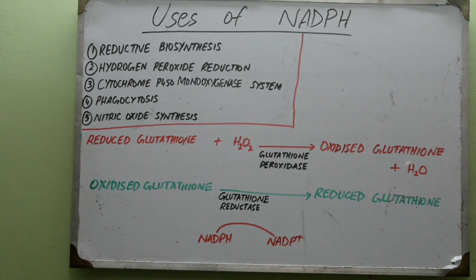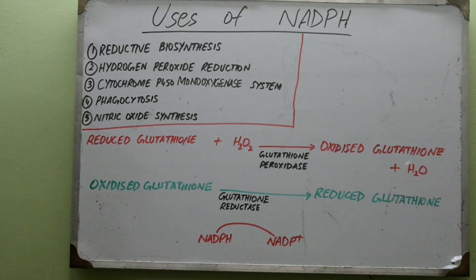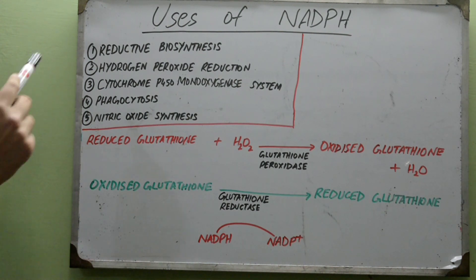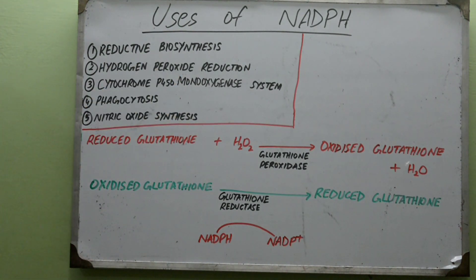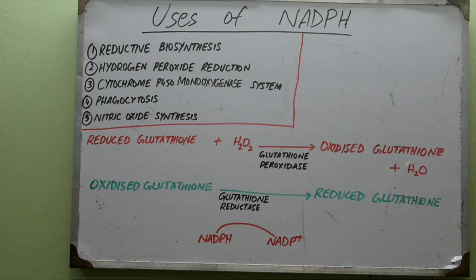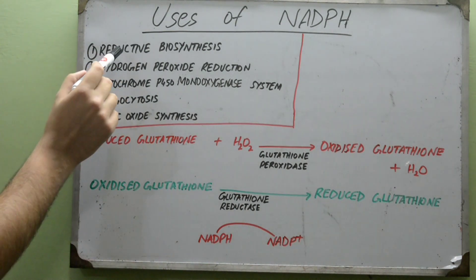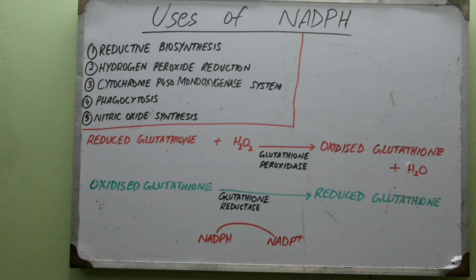NADPH and NAD share differences because NADPH is a much stronger reducing agent as opposed to NADH. So it is used, for example, in the reductive biosynthesis of cholesterol and of steroids. We'll discuss that in more detail under lipid metabolism, but for now just remember that NADPH is used in reductive biosynthetic processes.